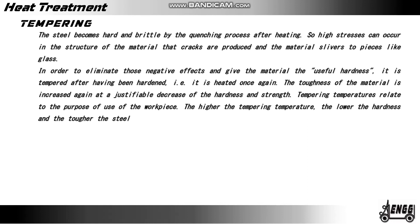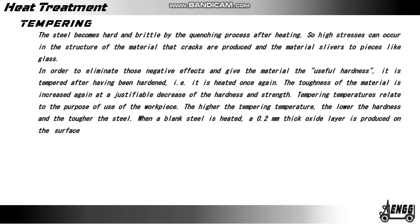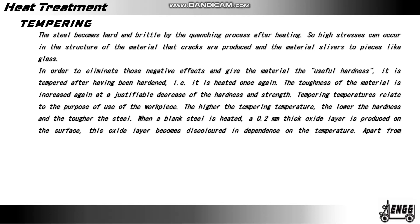When blank steel is heated, a 0.2 mm thick oxide layer is produced on the surface. This oxide layer becomes discolored depending on the temperature. Apart from temperature gauges, temperature can also be estimated by the color of this oxide layer.